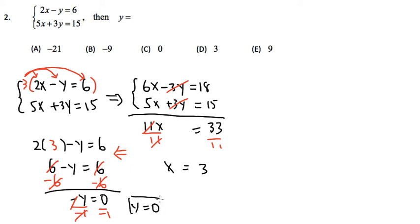As we can see, y is equal to 0. And that's what the equation is asking, not 3, because we didn't even look for x. We are looking for the y. So y is equal to 0. That's answer choice C here. And that's how we do a system of equations.